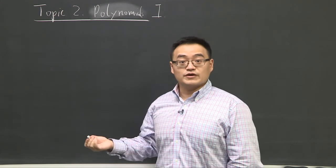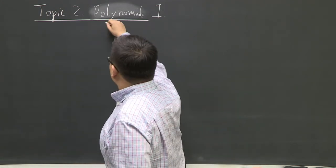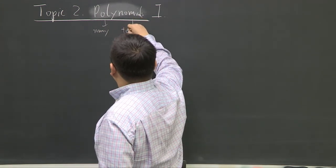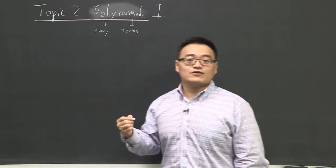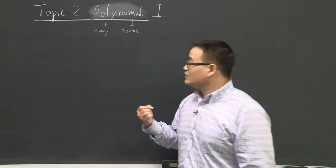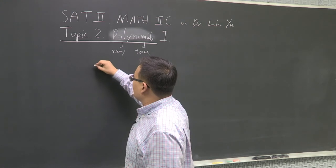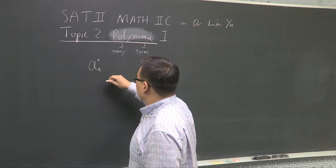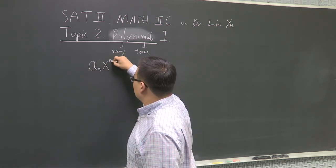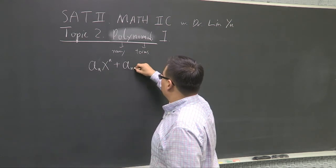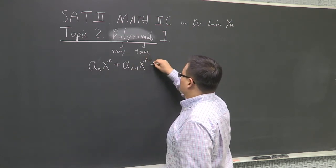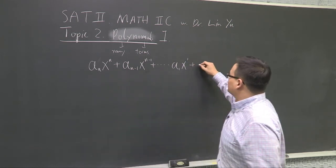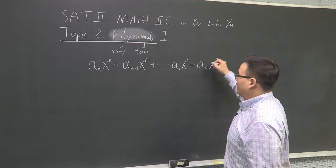So what does it mean to have a polynomial? Poly means many, as many of you probably know, and nomial means terms. The mathematical definition of a polynomial is: P(x) = a_n times x to the nth power, plus a_(n-1) times x to the (n-1), all the way down to a_1 times x, plus a_0 times x to the 0.